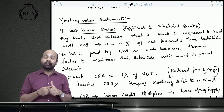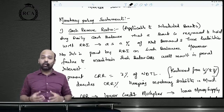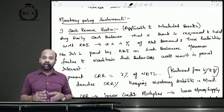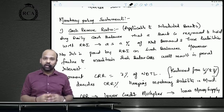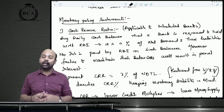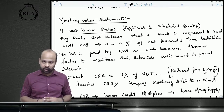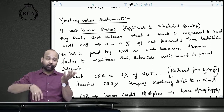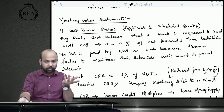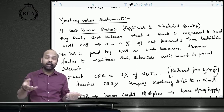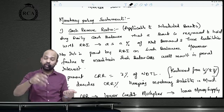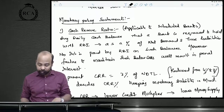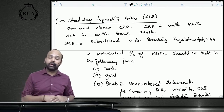CRR is the average amount of cash balances that a bank is required to hold with the RBI, as a percentage of net demand and time liabilities — currently at 3%. The RBI pays no interest on these balances; failure to maintain them attracts penal interest. When CRR is increased, banks hold more cash with the RBI, decreasing their credit creation — a contractionary policy. When CRR is reduced, banks can lend more — an expansionary policy.